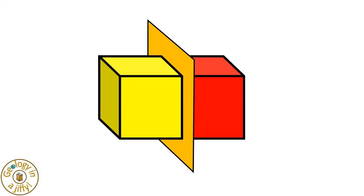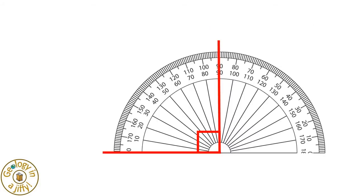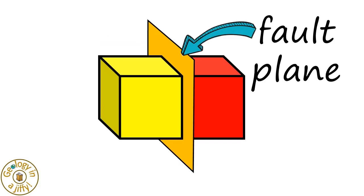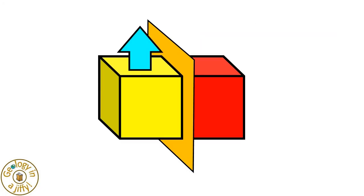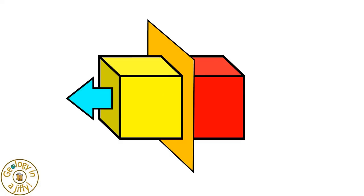The surface between the two moving blocks is called a fault plane, and can be horizontal, or vertical, or any angle in between these. A block of rock on one side of the fault plane can suddenly slip and move relative to the other block — either upwards, or down, or sideways, or squashed together, or pulled apart.